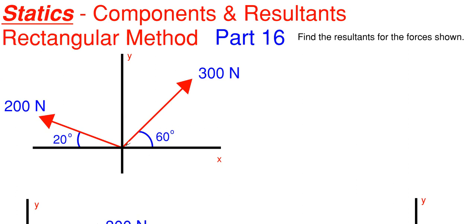For this problem, we only have two forces. We have a 300 newtons force at 60 degrees off the x-axis going up and to the right, and a 200 newton force at 20 degrees off the x-axis going up and to the left. We have to find the resultant between these two forces — the resultant being the final combination of these two forces in terms of direction and magnitude.